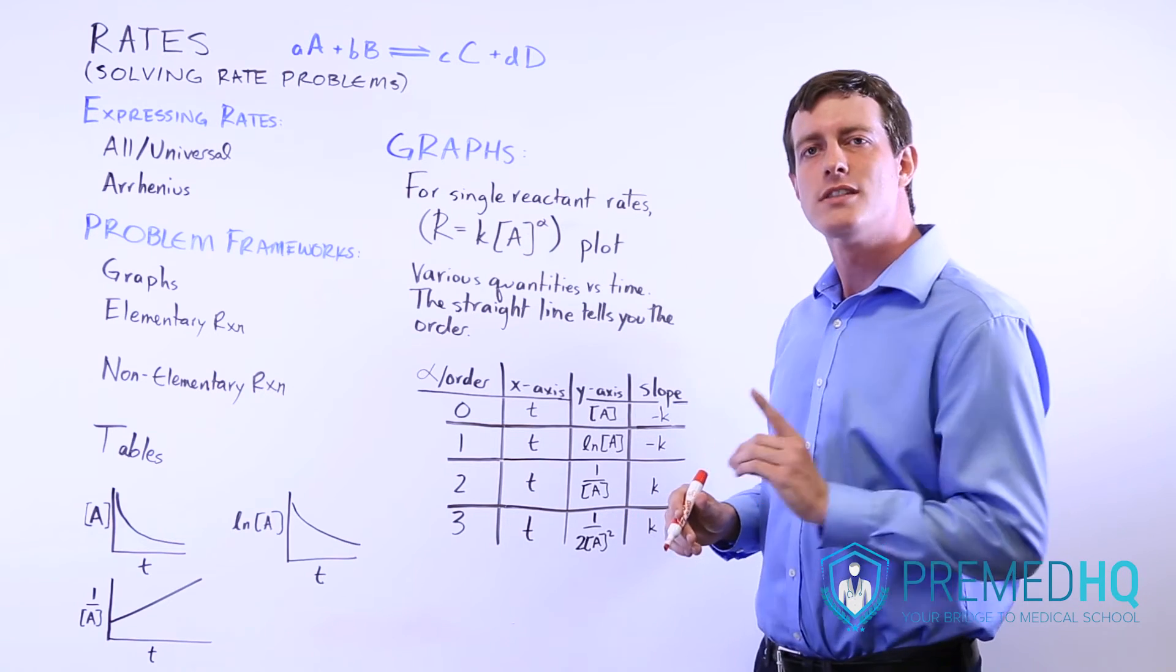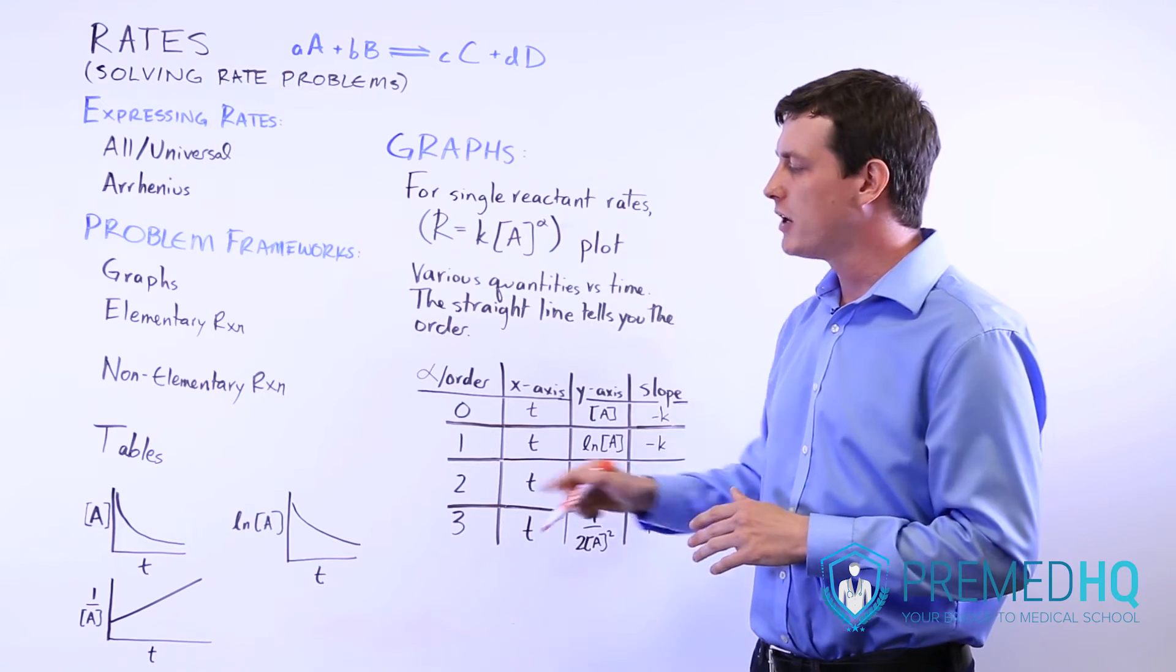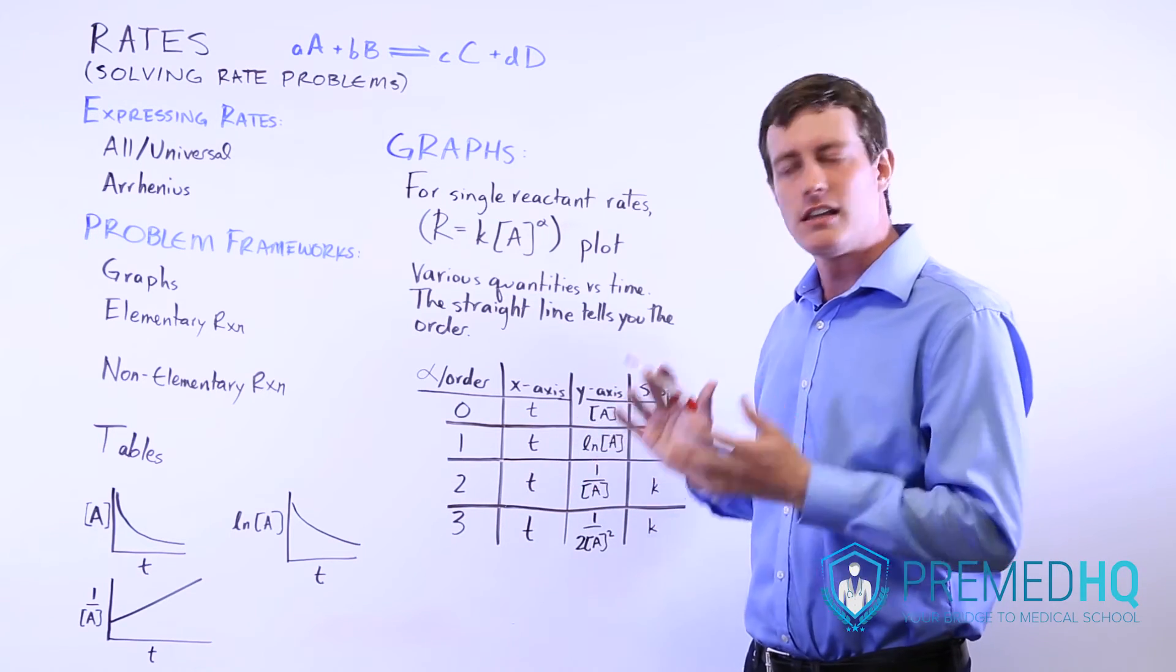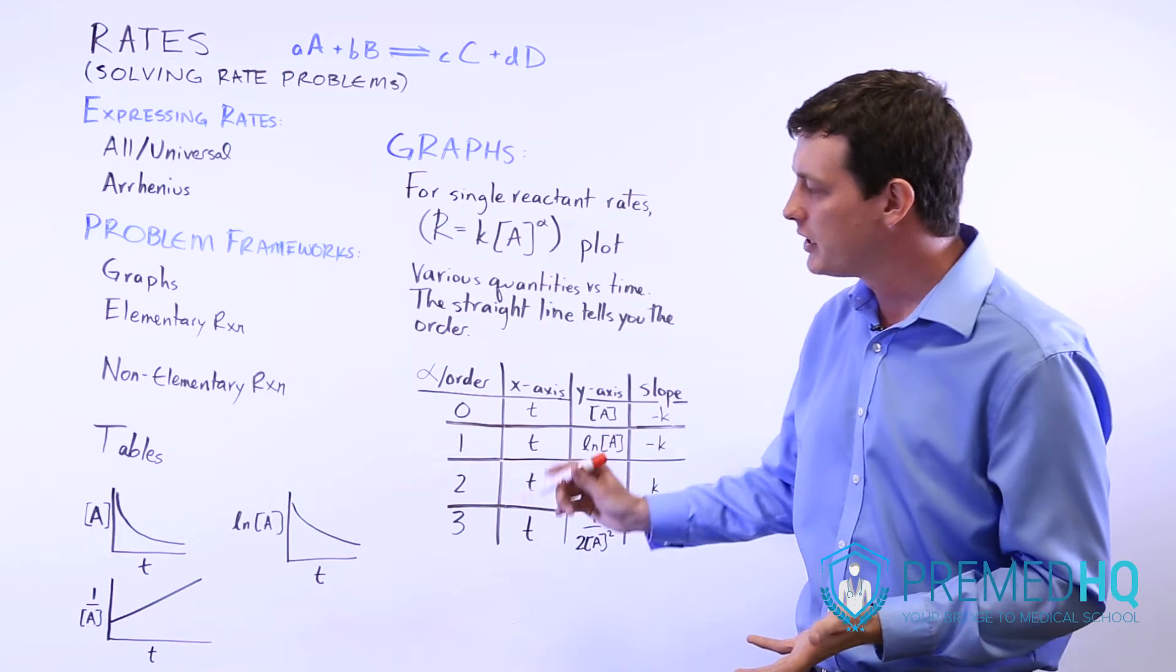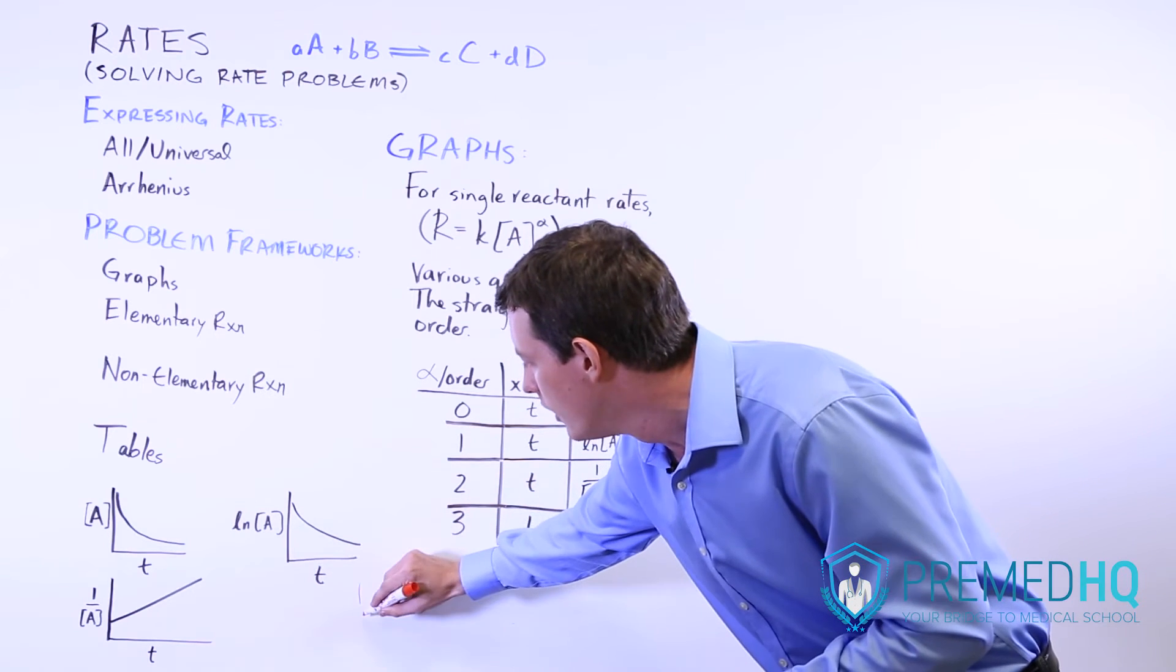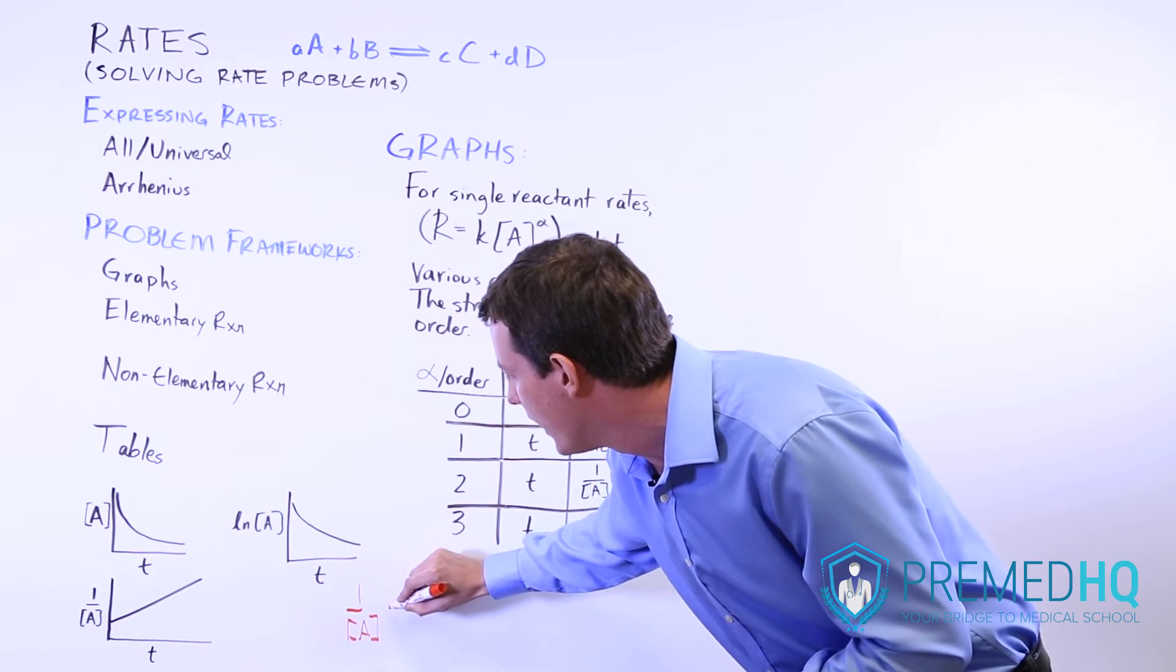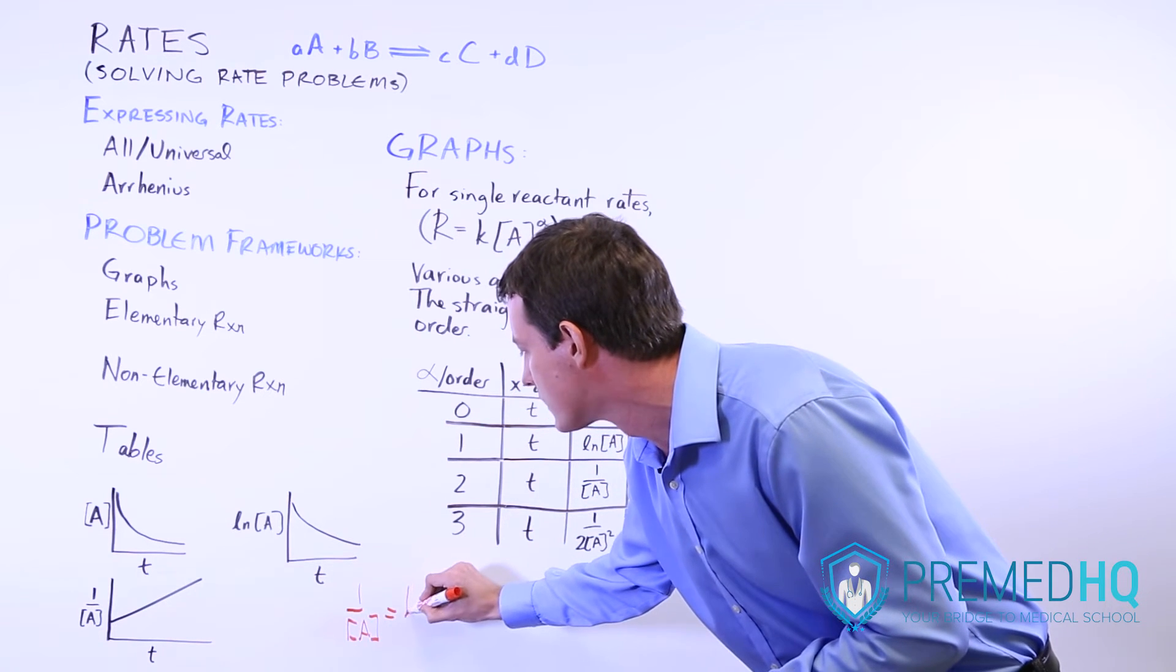Or they can take it one step further, and they can express this line as an equation, as a y equals mx plus b linear equation. And so in that case, our value y is going to be 1 over A.